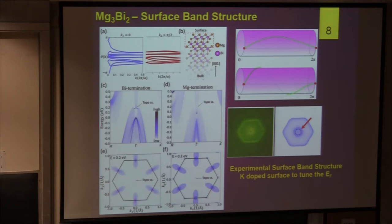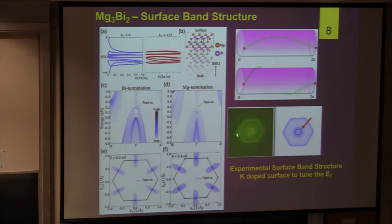But we also want to really measure it from experiment. So we did the ARPES measurement. On Thursday there will be an introduction to ARPES measurements. ARPES is a super powerful measurement to get the band structure. This is our theoretical band structure from DFT calculation, and this is the experimental one from the image. It's very beautiful — we can see all these topological features.